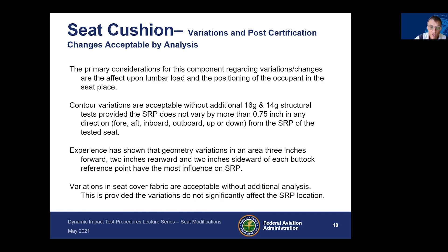Experience has shown that geometry variations in an area three inches forward, two inches rearward, and two inches sideward of each buttock reference point have the most influence on the SRP. This area is about where the hard points of the ATD pelvis sit on the cushion. You can vary the seat fabric cover without additional analysis, provided the variations do not significantly affect the SRP location. For instance, if your original testing was with leather and you need to swap to fabric, you can do so, assess your SRP, and not conduct any additional analysis.